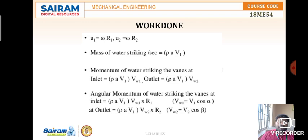Linear velocity u1 is equal to omega times r1, where omega indicates the angular speed in radians per second and r1 is the radius. Similarly, u2 equals omega times r2.